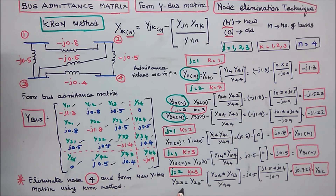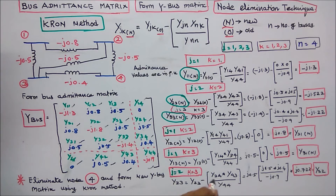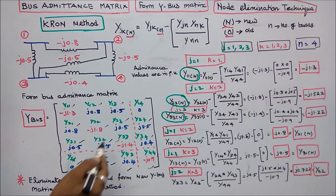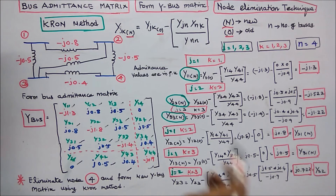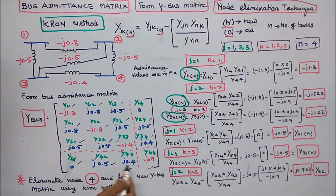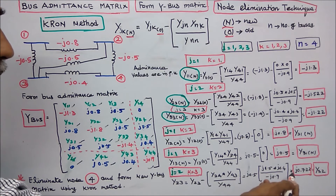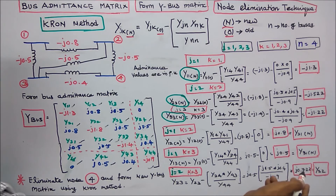For j=2, k=3: Y23(new) = Y23(old) minus Y24 times Y43 divided by Y44. Y23(old) is plus j0.5, Y24 is j0.5, Y43 is j0.4, divided by minus j0.9, giving Y23(new) equal to j0.722. By symmetry, Y32(new) equals j0.722. The off-diagonal elements are now complete.